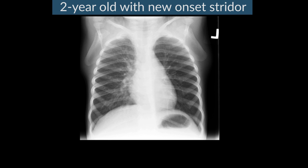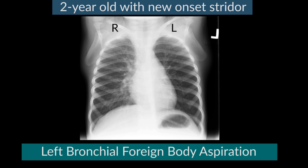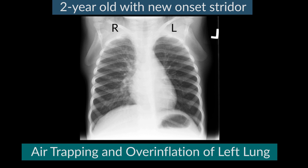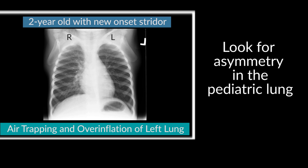Here, a two-year-old who presents with new-onset stridor. We can see an asymmetry in the density of the lungs, with the left hemithorax looking much more lucent than the right side. The size of the pulmonary vessels is also very different on the left side compared to the normal right side. This is a child who aspirated a foreign body in the left bronchus, with air trapping and overinflation of the left lung and associated decreased pulmonary vascularity. Asymmetry is an important thing to look for in the pediatric lung.